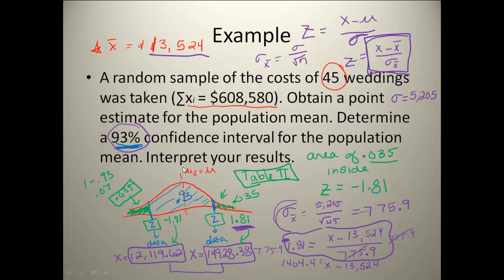Now the last part says interpret your results. Well, for that, what we would say is that we are 93% confident that the mean wedding cost is between $12,119.62 and $14,928.38.